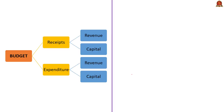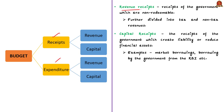Receipts and expenditure form the core of a budget. The receipts are further classified as revenue receipts and capital receipts. Revenue receipts are receipts of the government which are non-redeemable — it means they cannot be reclaimed from the government — and they are further divided into tax and non-tax revenue receipts. Capital receipts include receipts of the government which create liability or reduce financial assets, for example market borrowings or borrowing by the government from the Reserve Bank of India.